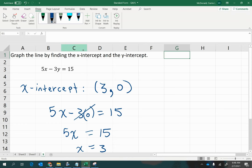So now I have one point that I can plot on the graph. I'll need at least one more point to be able to graph this line. So now I'm going to go ahead and find the y-intercept.